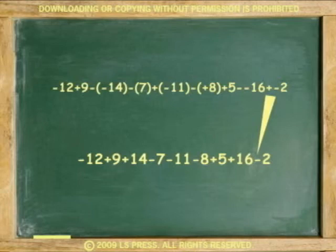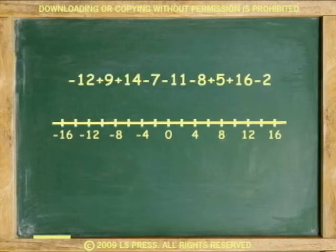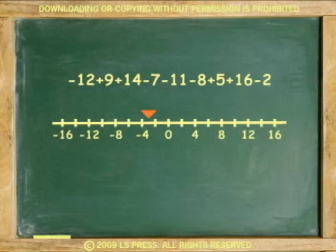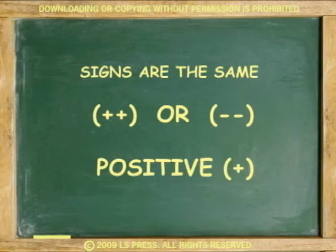Find the answer by moving right and left on the number line. Starting at 0: to the left 12, to the right 9, to the right 14, to the left 7, to the left 11, to the left 8, to the right 5, to the right 16, to the left 2 — stopping at 4.